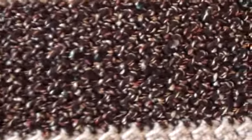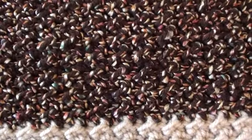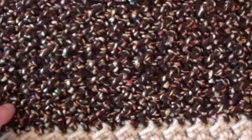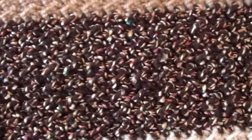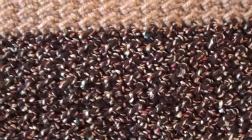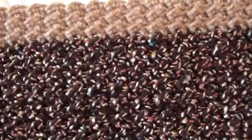And for row two and for all following rows, you'll chain two and then do a slip stitch into the next stitch, which will be a half double crochet.